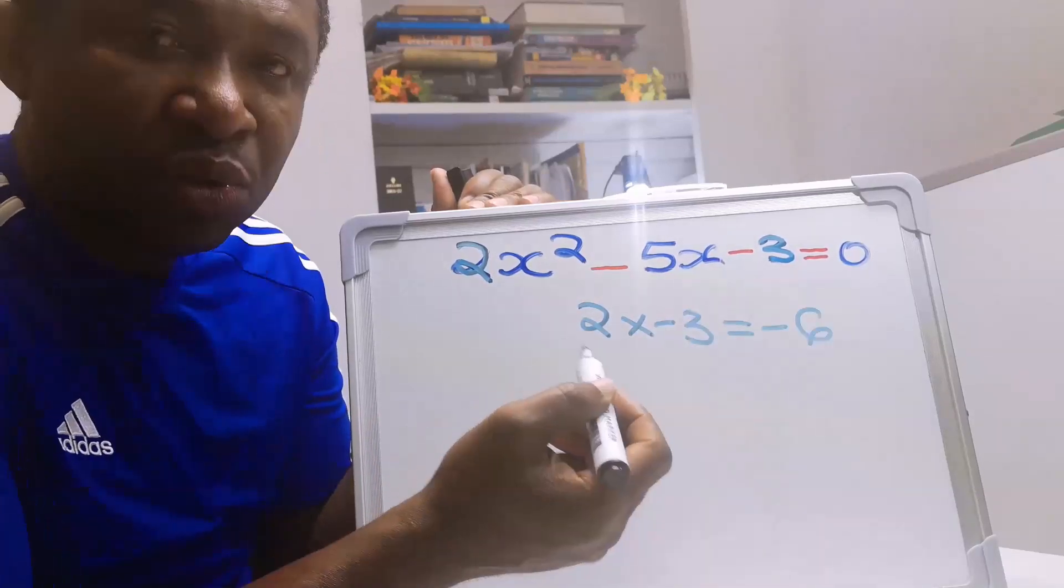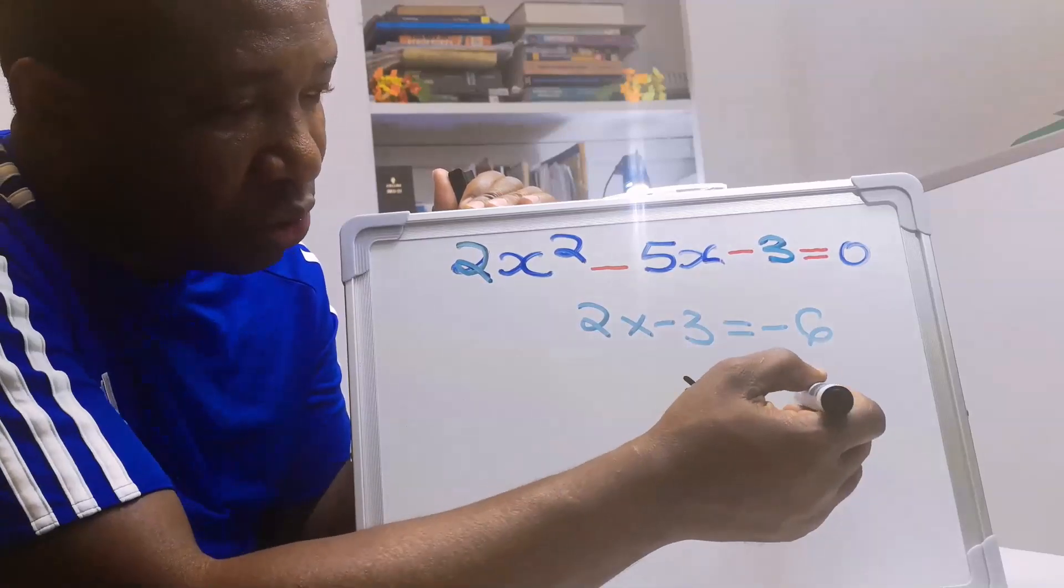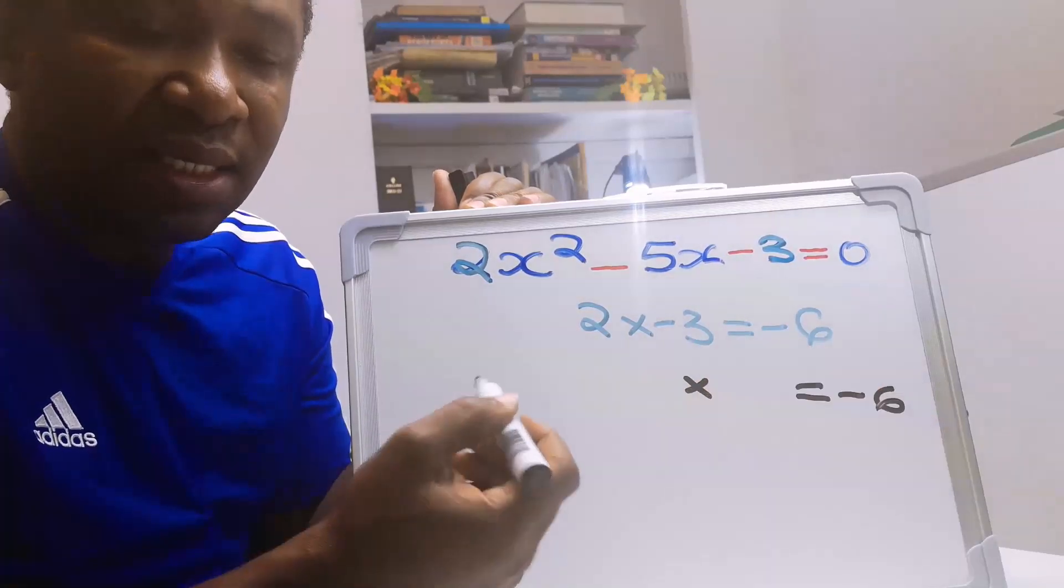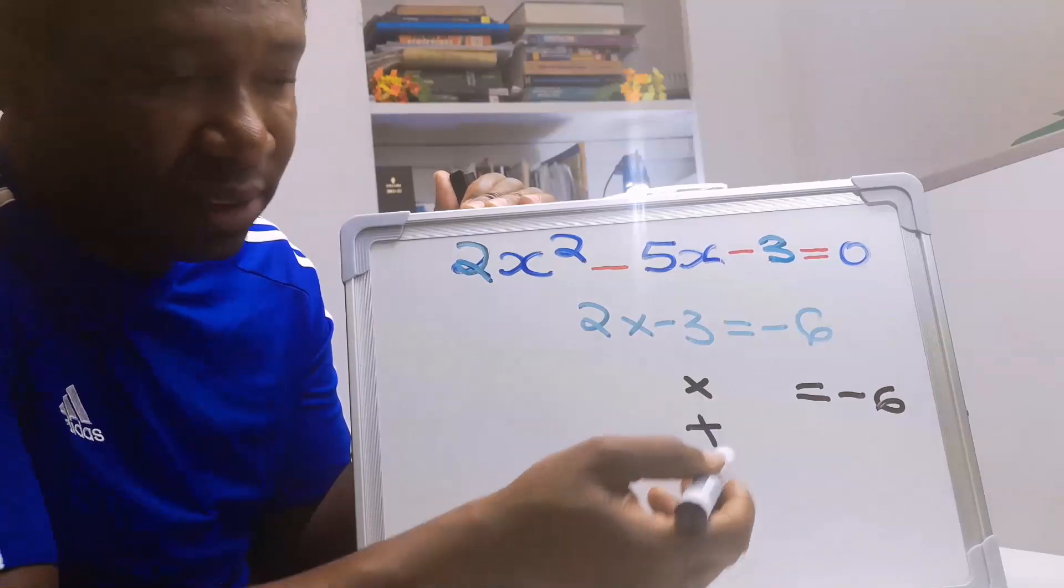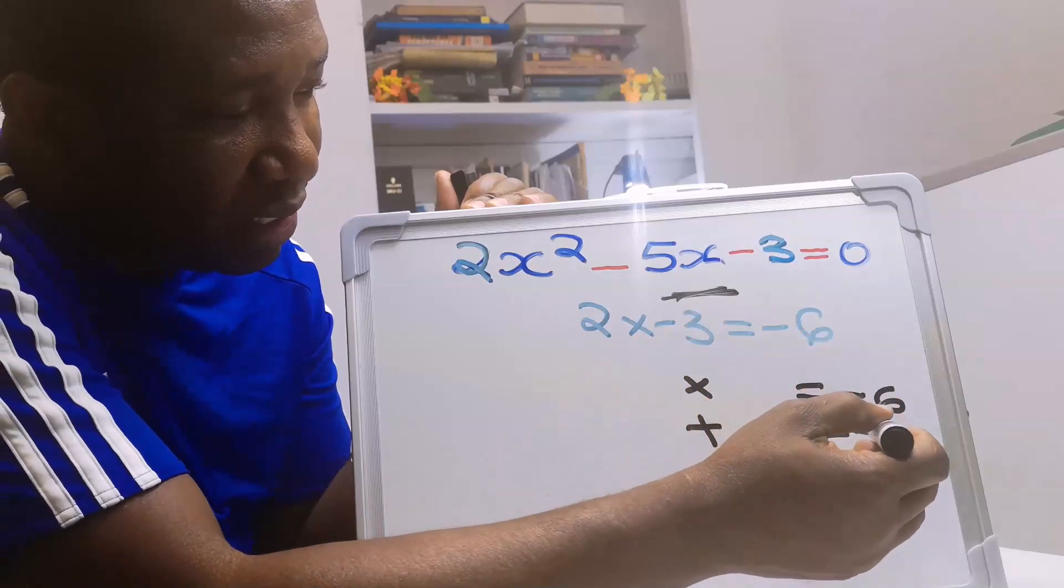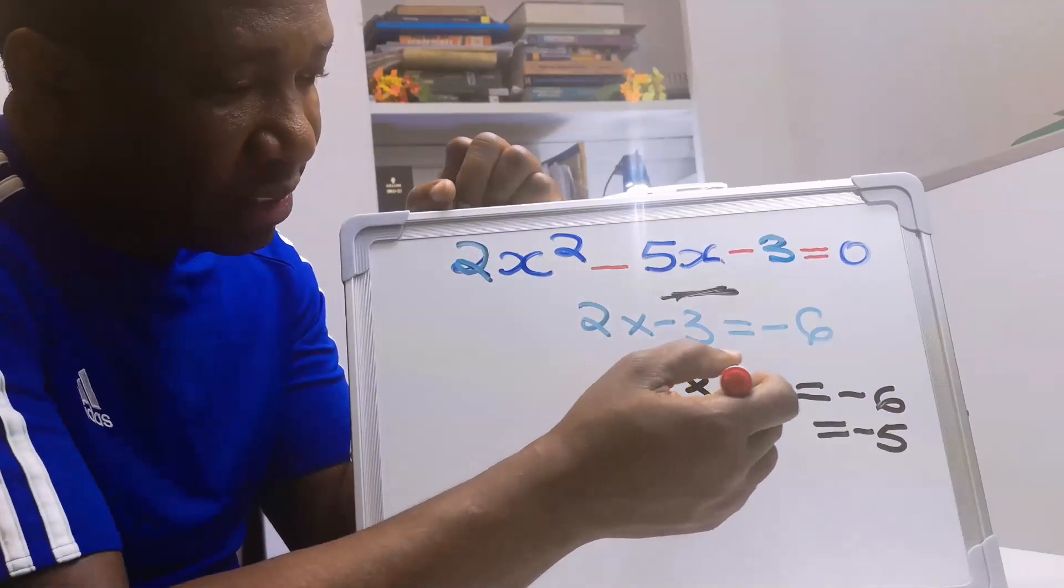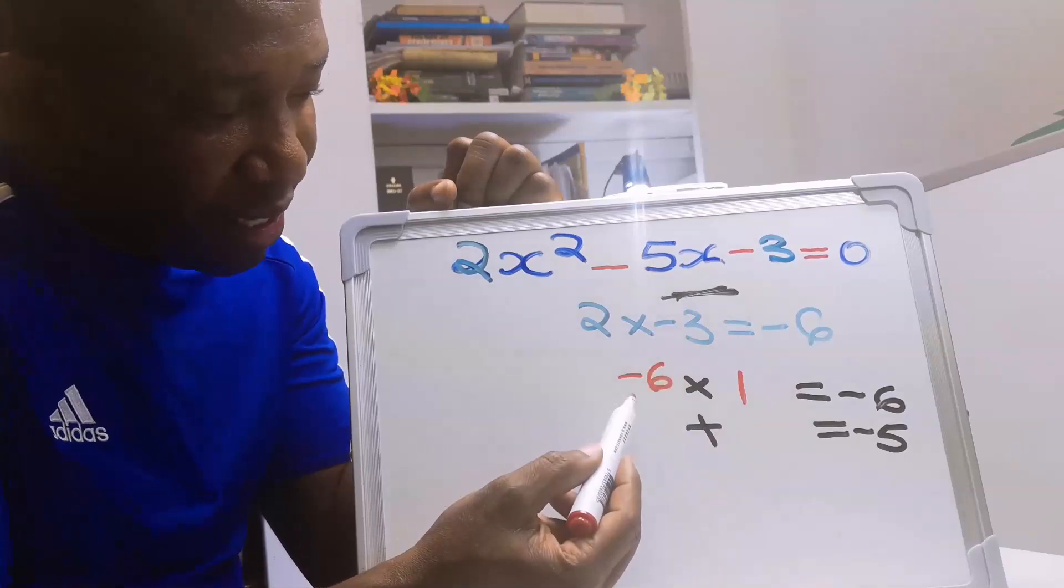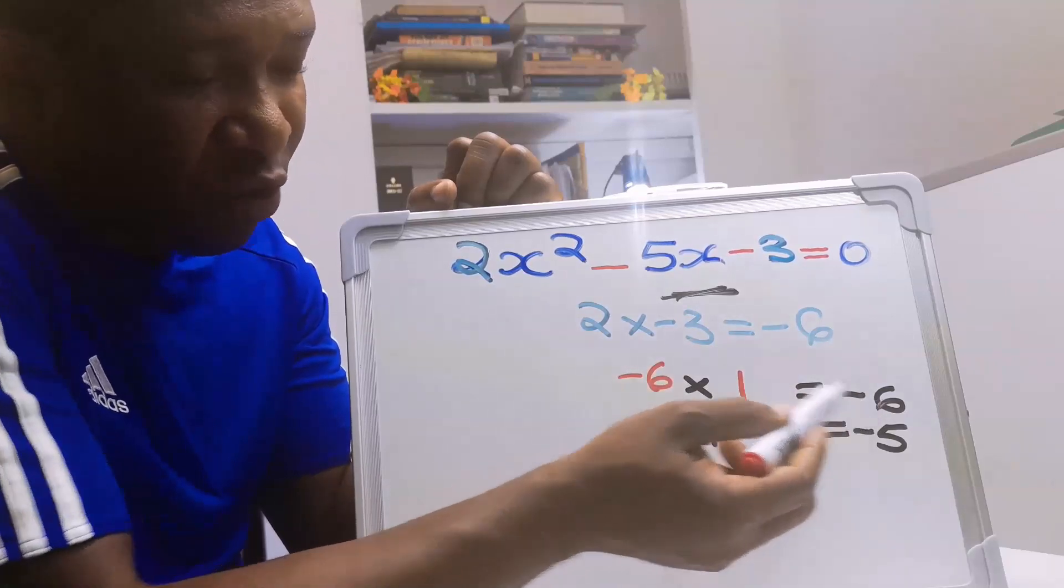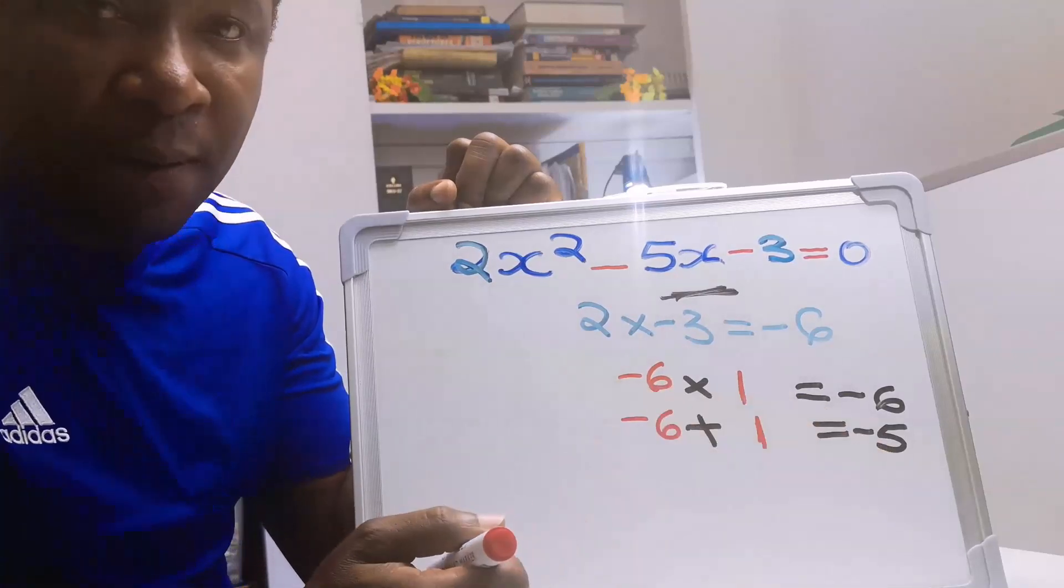Next, we are going to think of two numbers. When we multiply these two numbers, we are going to get minus 6. And when we add these two numbers, we are going to get a replacement of this middle term which is minus 5. The two numbers are minus 6 and 1. Minus 6 multiplied by 1 will give you minus 6, and minus 6 plus 1 will give you minus 5.